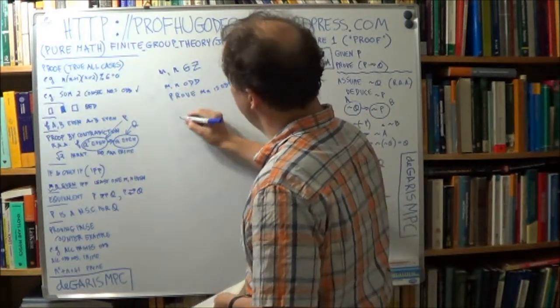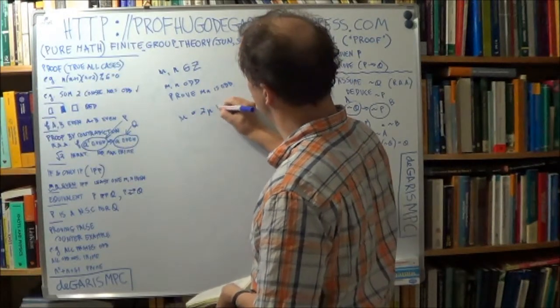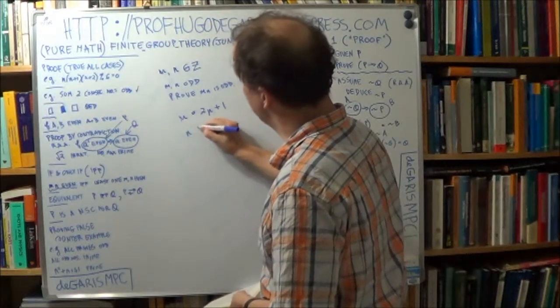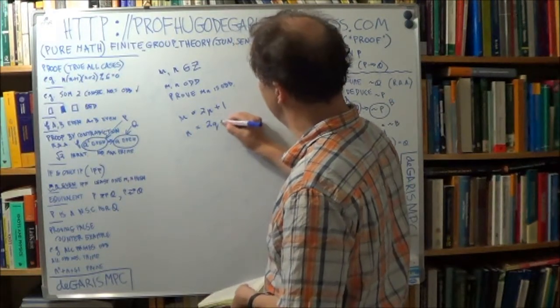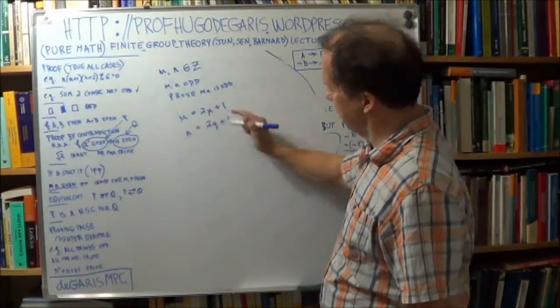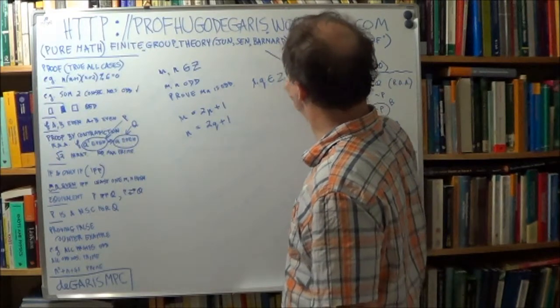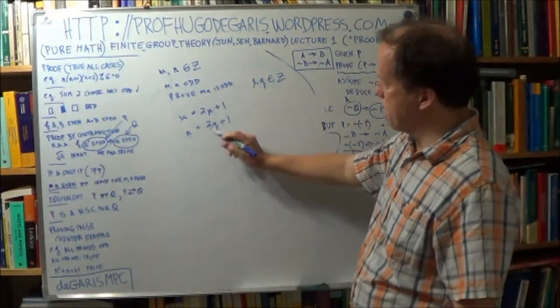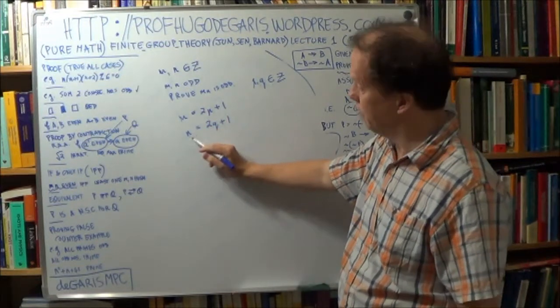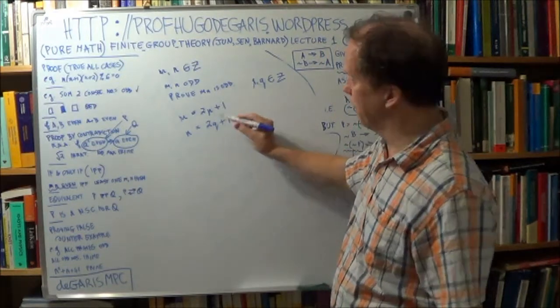Well, let m and n belong to the integers, and m and n are odd. You know that m is odd, so it takes the form 2p plus 1. Now p's an integer. Now n is also odd, so it takes the form 2q plus 1. p and q also belong to the integers. You know that m and n have to be odd because 2p is even plus 1 makes it odd.